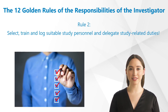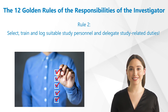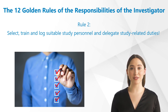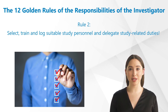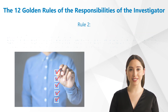Rule 2: Select, train, and log suitable study personnel and delegate study-related duties. The investigator has to log responsibilities, duties, signatures, and initials of the study personnel. The investigator will receive a delegation log in one form or another for each study, and this form is used by the principal investigator to enter procedures the people involved are entitled to undertake within the study.